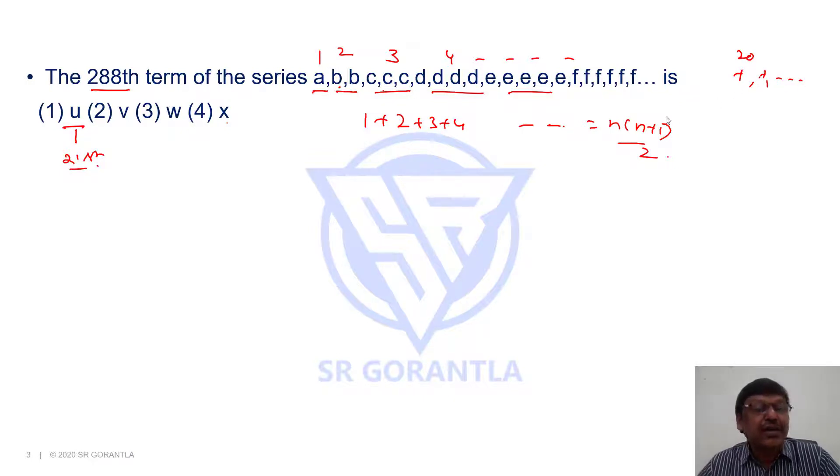So up to t if I write, total how many terms we are writing? 1, 2, 3, 4. As t is the 20th letter, I would have written 20 times, means the total number of terms could have been 20 into 21 by 2. It is 210.